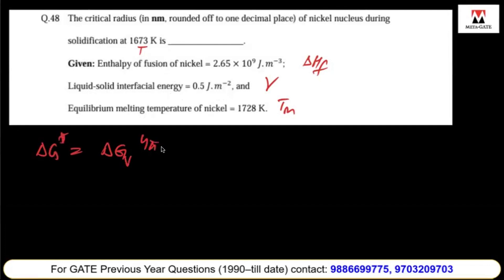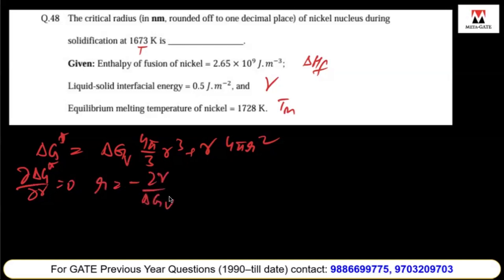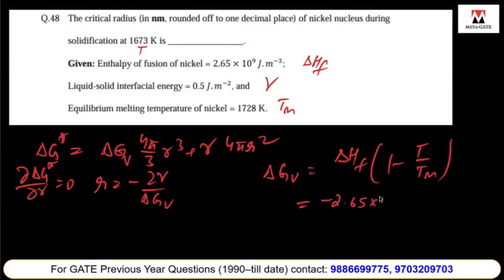For nucleation, the activation energy is the volume energy plus surface free energy. If you want to find the critical radius, you need to differentiate it with respect to r, so r equals 2 gamma over delta G v. This volume energy is a function of enthalpy of fusion. Enthalpy of fusion is 2.65 times 10 to the 9, so it's minus 2.65 into 10 to the 9 times (1 minus 1673 divided by 1728), which equals minus 8.4 times 10 to the 7 joules per meter cubed.